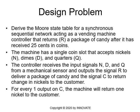The design problem here is to derive a state table for a synchronous sequential network acting as a vending machine controller that returns a package of candy after it has received 25 cents in coins. The machine has a single coin slot that accepts nickels (N), dimes (D), and quarters (Q). The controller receives input signals N, D, and Q from a mechanical sensor and outputs signal R to return a package of candy, or signal C to return change in nickels only — one nickel per C output — to simplify the design.